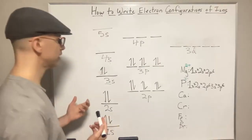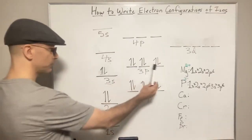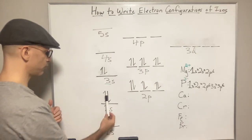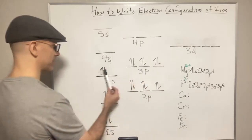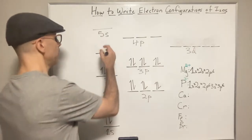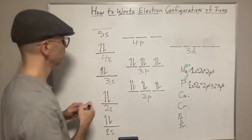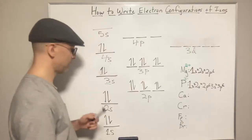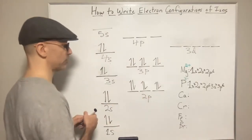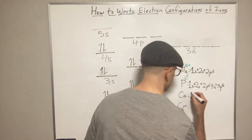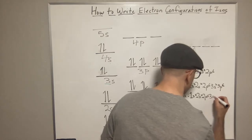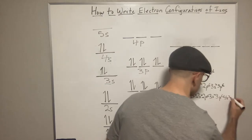Now let's move to calcium. Calcium is number 20 on the periodic table. We count up: 2, 4, that's 6 here — that's 10, that's 18. Calcium is number 20, so we need 2 more electrons, so we add 2 more electrons in the 4S. The electron configuration for calcium as a neutral atom is 1S2, 2S2, 2P6, 3S2, 3P6, and 4S2.